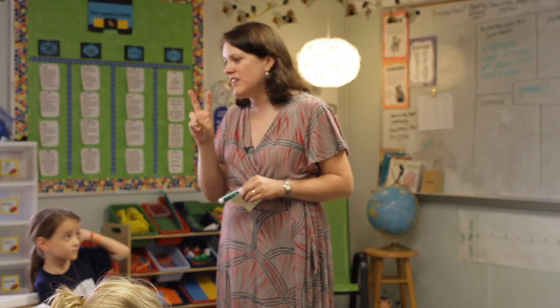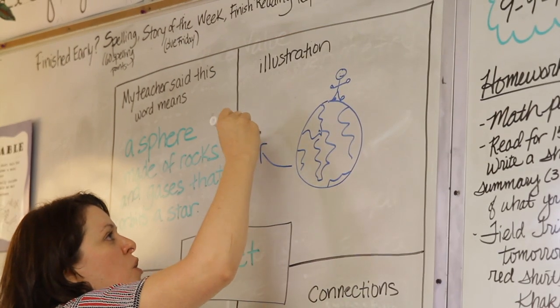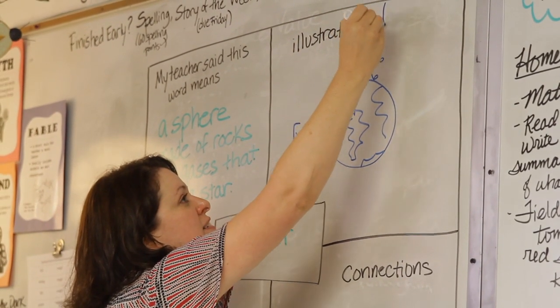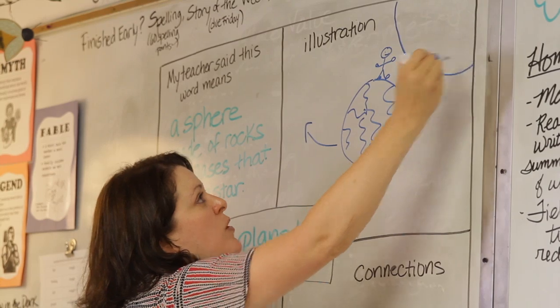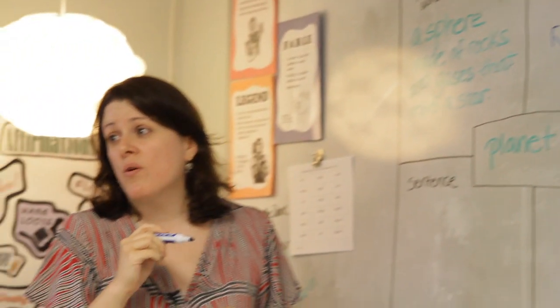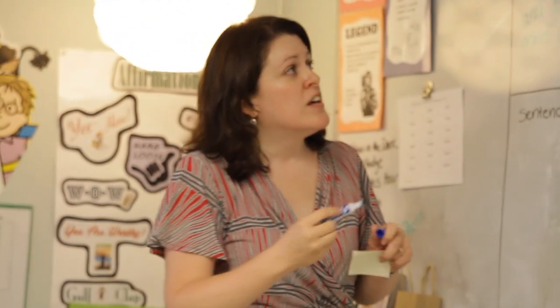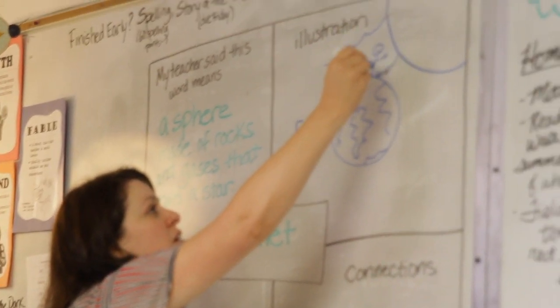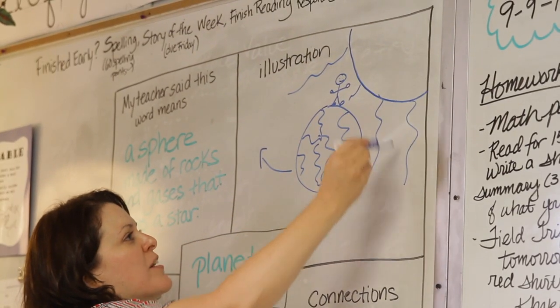I'll make an arrow going this way, and over here is the Sun — that's the star that we orbit. Same thing with sentences: we brainstorm some sentences, and then in the end they write a sentence that makes sense to them, and then we all write down the same connections.